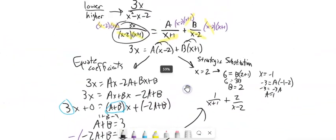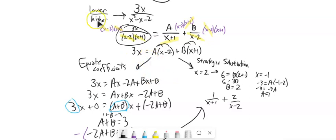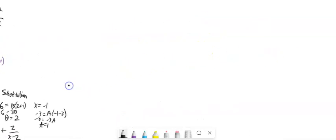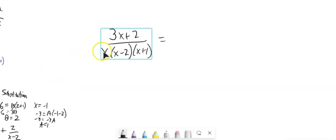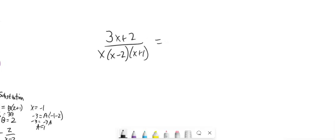That is the bulk of it. There are some other pieces to consider — when it's not lower over higher degree, when factors aren't factorable, and when factors are repeated. But before we dig into all those, let's do another example. Notice I've got three factors: x, x minus 2, and x plus 1. So I'm going to write this as three fractions added together — a over x, b over x minus 2, plus c over x plus 1.